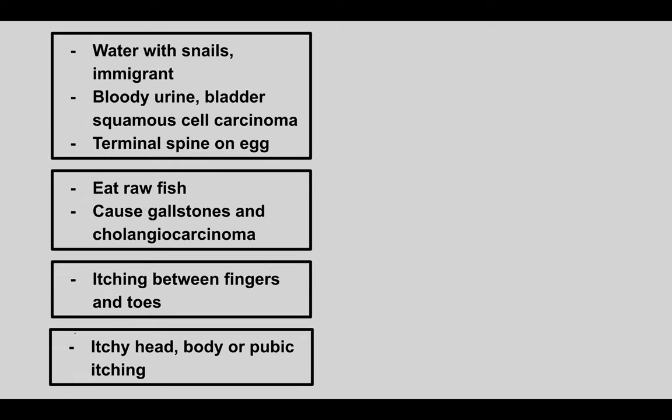The next patient has exposure to water with snails — usually an immigrant — and then develops bloody urine. It can lead to bladder squamous cell carcinoma and there's a terminal spine on the egg. This is Schistosoma. The next patient eats raw fish and this causes gallstones and cholangiocarcinoma. This is Clonorchis — look out for the gallbladder features.